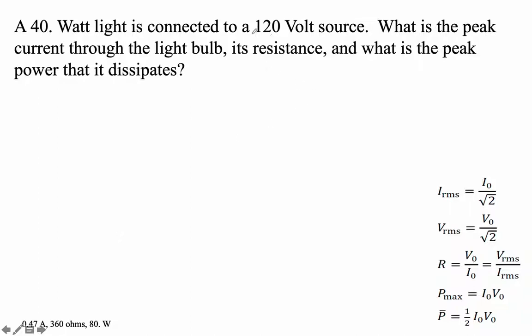A 40 watt light bulb is connected to a 120 volt source. So this is the average power, and that is RMS. What is the peak current through the light bulb? Its resistance, the light bulb's resistance. And what is the peak power that it dissipates?